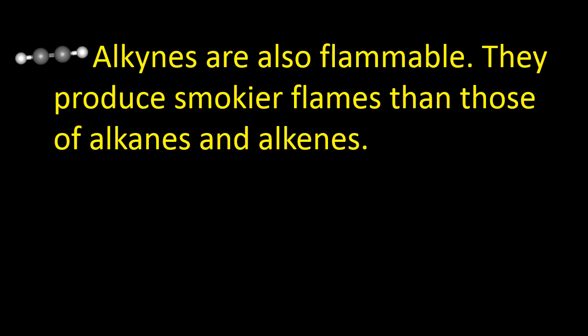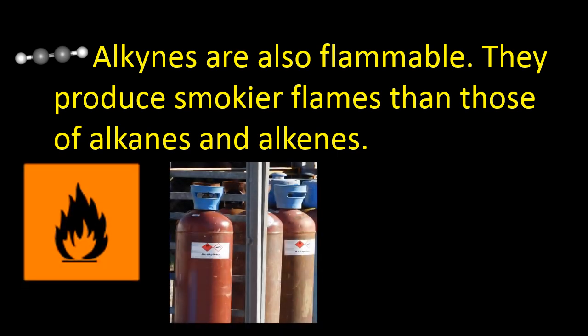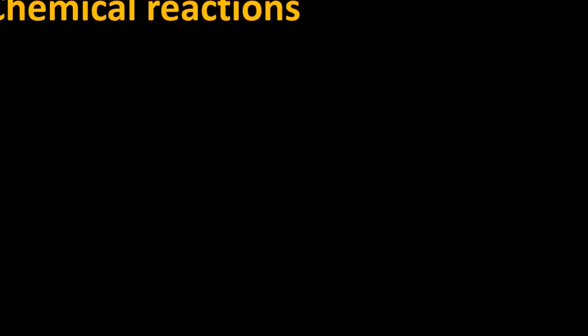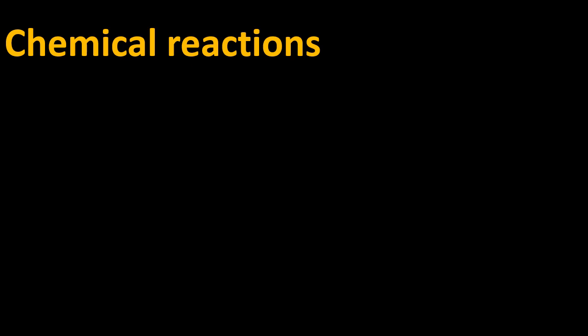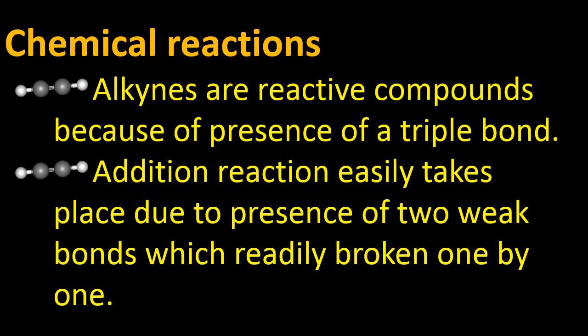Now for chemical reactions — these show how reactants react together. Alkynes are reactive compounds because of the presence of a triple bond. Since they are unsaturated, they can accommodate other atoms and undergo addition reactions easily, due to the presence of two weak pi bonds which break one by one.